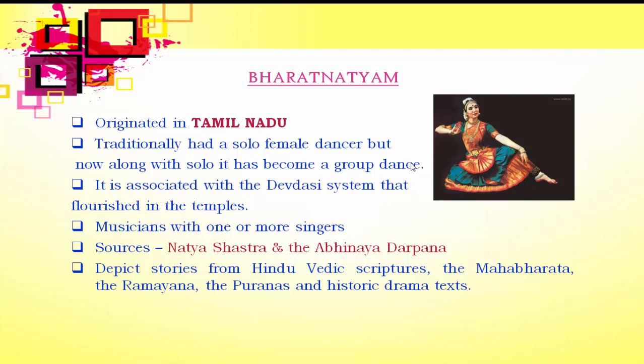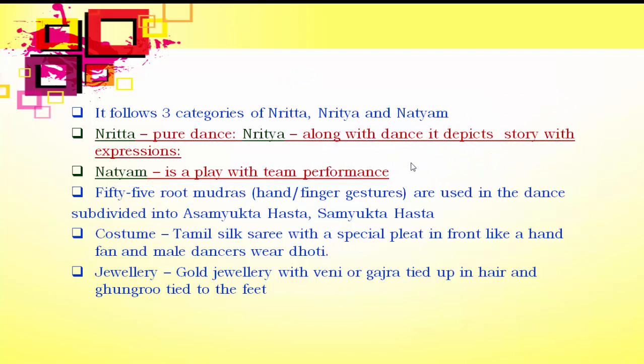Bharatnatyam originated in the state of Tamil Nadu. Traditionally it was a solo female dance, but now it has also become a group dance. It is associated with the Devadasi system that flourished in temples during the ancient period. The dance is accompanied by musicians with one or more singers. Its sources are Natyashastra and Abhinaya Darpana. It depicts stories from various Hindu and Vedic scriptures — the Mahabharata, Ramayana, Puranas and historic drama texts. This dance follows three categories: Nritha, Nrithya and Natyam.